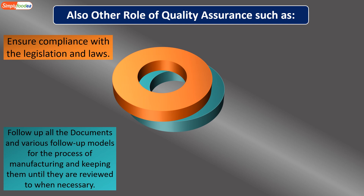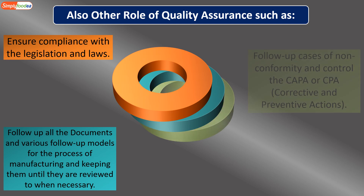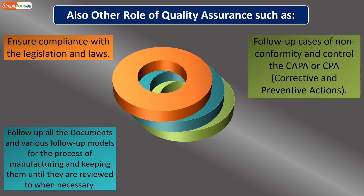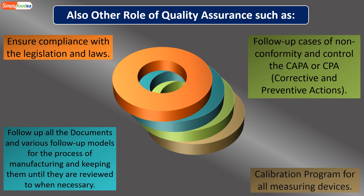Quality assurance is also responsible for following up on cases of non-conformity and controlling the CAPA program — corrective and preventive actions — which is a very important part of the quality system.